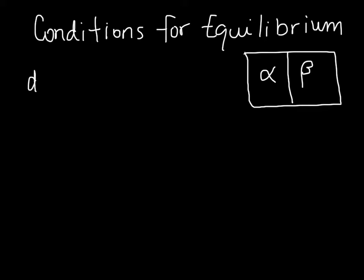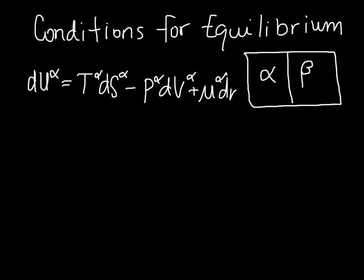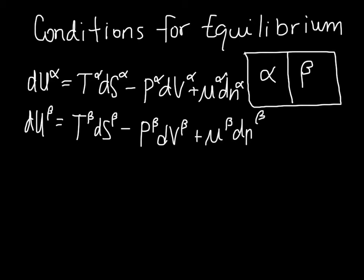So we can say, for the alpha part of our system, that the change in internal energy is equal to the temperature of the alpha part times the entropy change to the alpha part, minus P alpha dV alpha plus mu alpha dn alpha. We can write the same thing for beta, and this is going to be true according to the first law of thermodynamics. That's where this is coming from, the combined first and second laws.